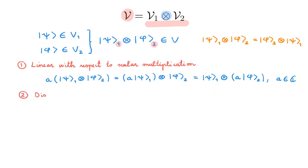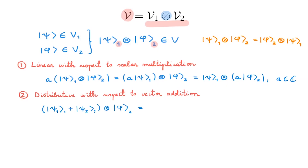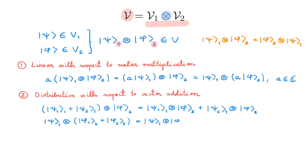The second property is that it is distributive with respect to vector addition. What this means is that the tensor product of |ψ₁⟩ + |ψ₂⟩ with |φ⟩ is equal to the tensor product of |ψ₁⟩ with |φ⟩ plus the tensor product of |ψ₂⟩ with |φ⟩. We have a similar expression when the addition is between states in V2. Note that the subindex outside the ket tells us which original state space the ket belongs to, and the subindex of the label identifies the specific ket. You should make sure you understand the role of each subindex, as it is very important for confidently manipulating expressions in tensor product state spaces.